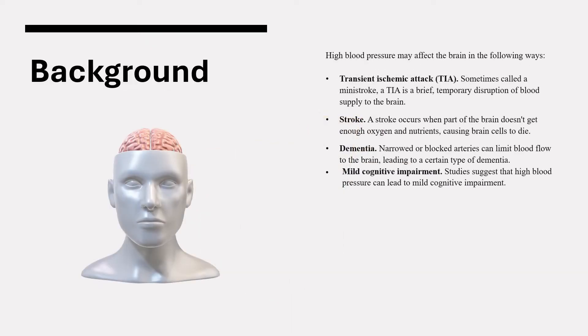A little bit of background about how hypertension affects the brain. High blood pressure may affect the brain in the following ways. One, in the form of a transient ischemic attack, also known as a TIA, sometimes called a mini stroke — a brief, temporary disruption of blood supply to the brain. A TIA is often a warning sign of a full-blown stroke.